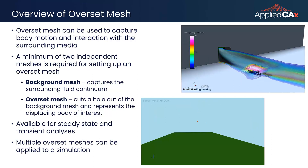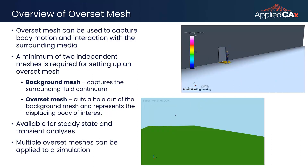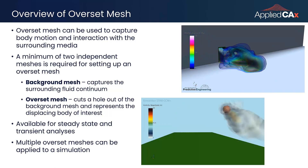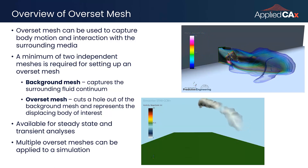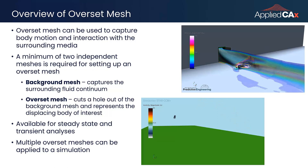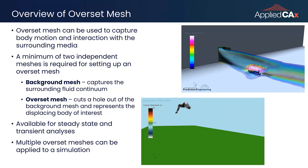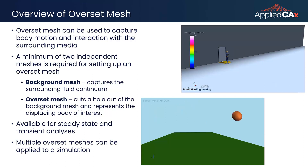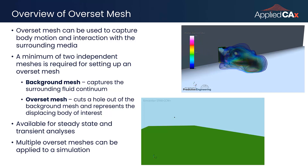We will discuss this simulation in a little more depth. There are two primary components for setting up an Overset Mesh. You need to define two independent regions: one for the background mesh and one for the Overset region. The background would be the main analysis domain, and the Overset will act like a dynamic cutter going through that domain.